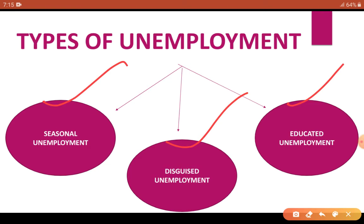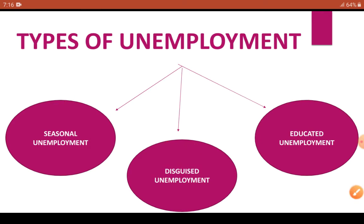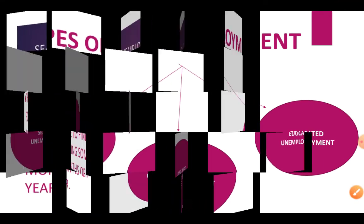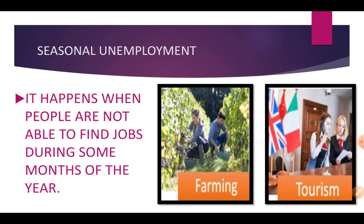Now we will understand each one in detail. First is seasonal unemployment. What is seasonal unemployment? It occurs when a person is unable to find a job during certain particular months of the year. That is, in a year there are twelve months, and in some of those months you get work, but only for a certain number of months.